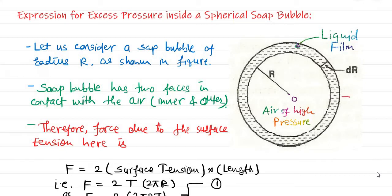This is the outer surface which is in contact with the air, and this inner surface also. Whenever we talk about a bubble, we have air inside the bubble as well. When the bubble breaks, the air comes out, and obviously the pressure inside that bubble is more — high pressure air is there.